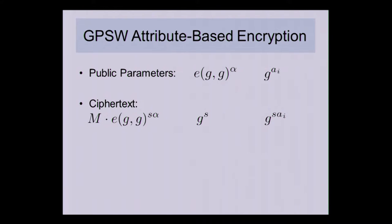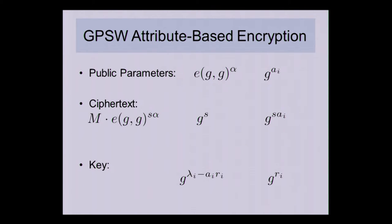You additionally give out g^s and g^(s·a_i) for each attribute associated with the ciphertext — since we're encrypting under sets of attributes. For keys, the key generator takes the secret α and generates a linear secret sharing of α under the desired policy, creating shares λ_i each associated with a given attribute. If you have a set of λ_i corresponding to attributes authorized by the policy, you can reconstruct α linearly; without such a set you cannot. The key gives you g^(λ_i - a_i·r_i) for all i, and also g^(r_i), where r_i is a random exponent.